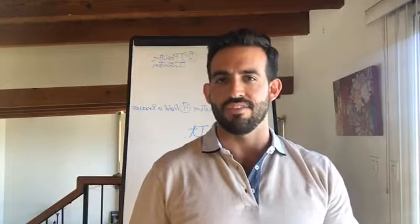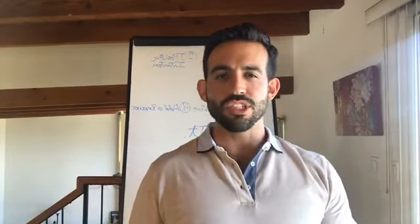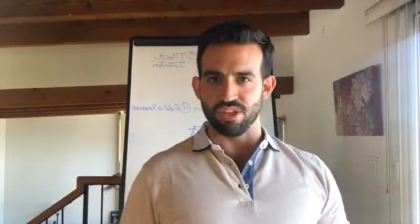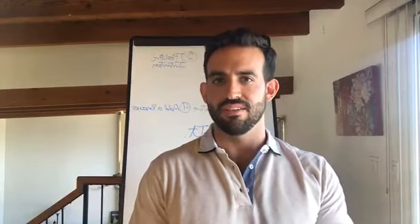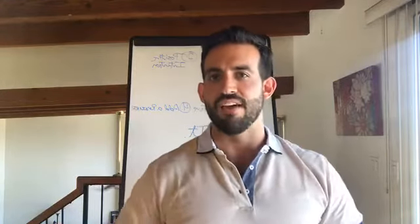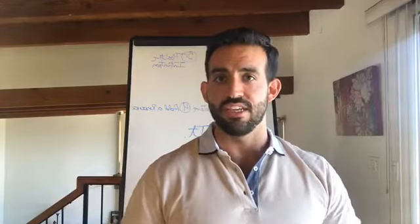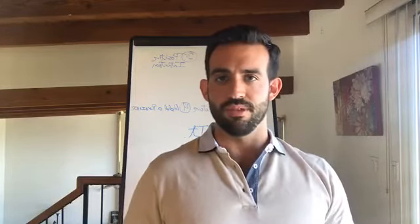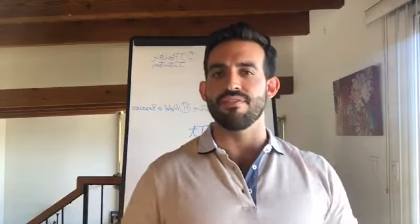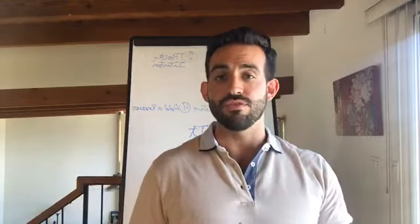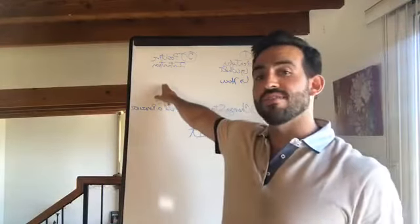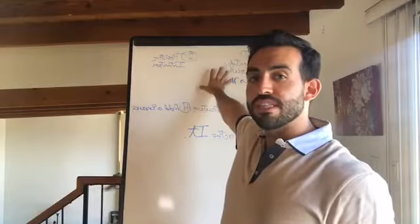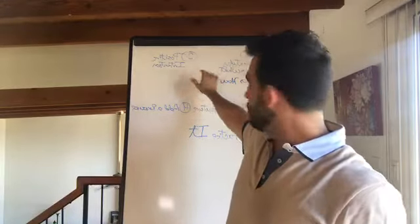Keep going deeper until you identify the positive intention of that negative internal dialogue. Once you've found it, ask permission: go inside and ask, 'Would it be okay if we found a new way to meet that value of safety, or that value of doing a good job?' Notice if you have any resistance. If you don't, then you can move on to the next step.